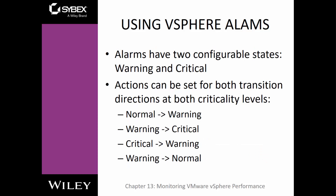Alarms have two configurable states: warning and critical. Actions can be set for the transition based off of directions at both critical levels. Examples could include normal to warning, warning to critical, critical to warning, and warning to normal — these are the states they can go in and the actions we can set.